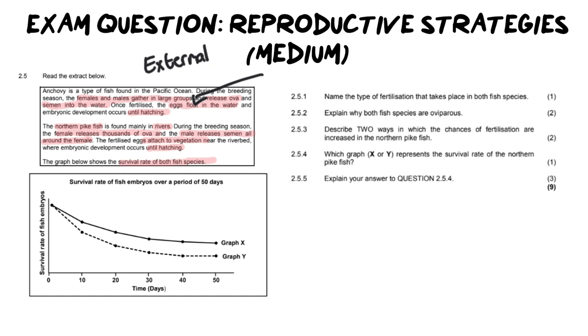For anchovies, the eggs just float, whereas in our northern pike fish they attach to vegetation. Which one would probably improve survival? I'm hoping that you're already thinking vegetation, because if eggs attach to vegetation they're more stable, they're less likely to be lost and washed away, and it means it gives them a bigger chance of surviving until hatching. So according to the graph, we've got graph X which has the highest survival rate. I'm going to put that as the northern pike fish. And I'm going to put graph Y, which has the lowest survival rate, with my anchovies. Let's have a look at our questions now.